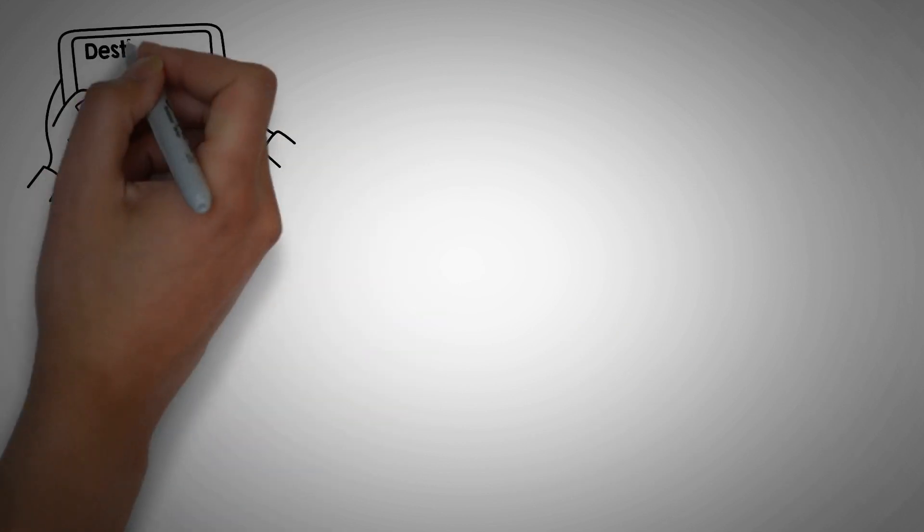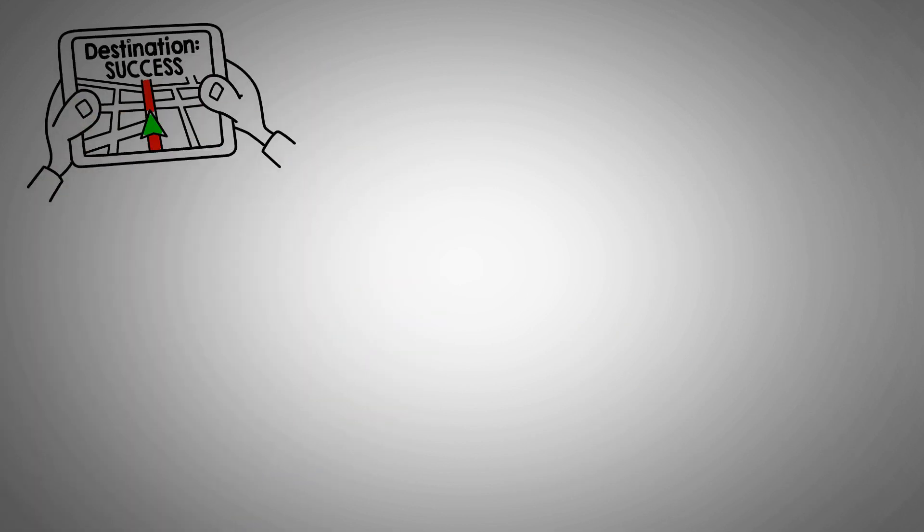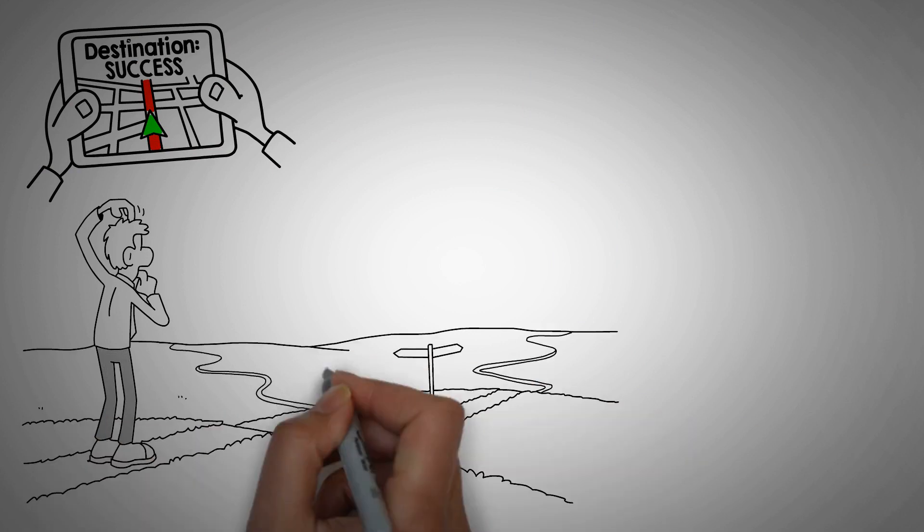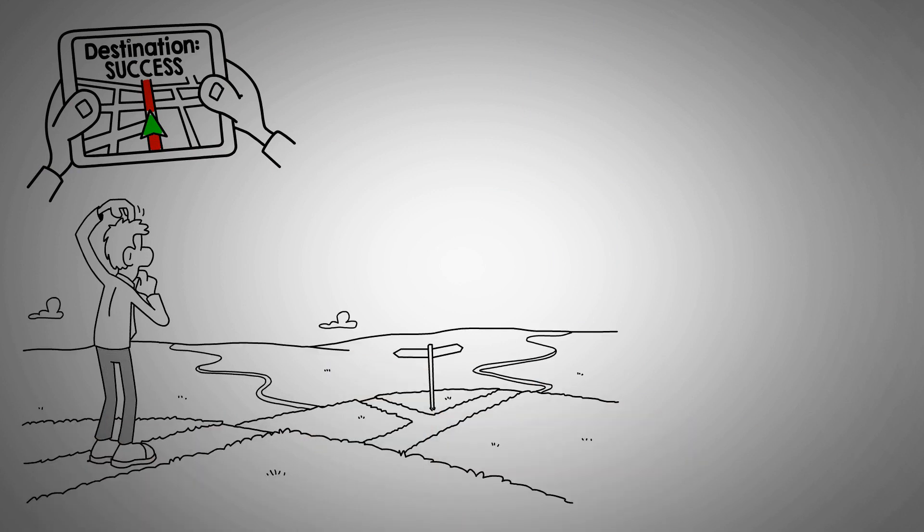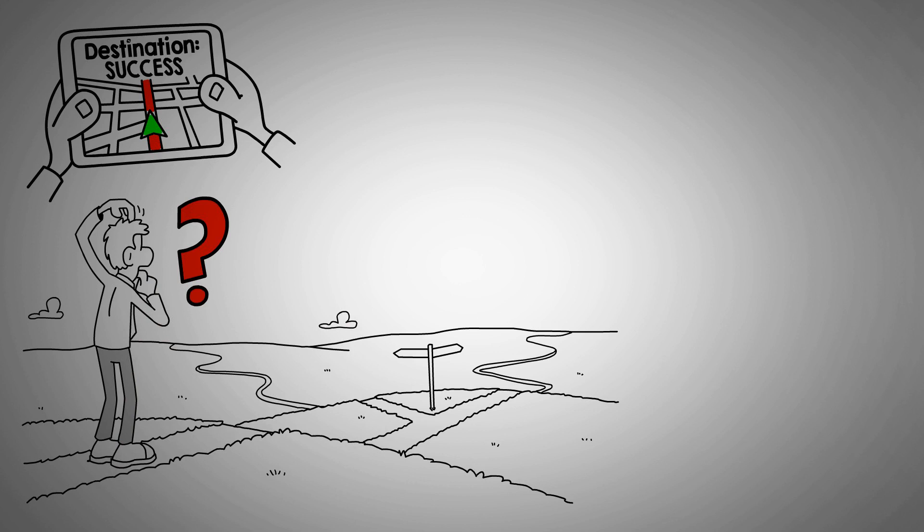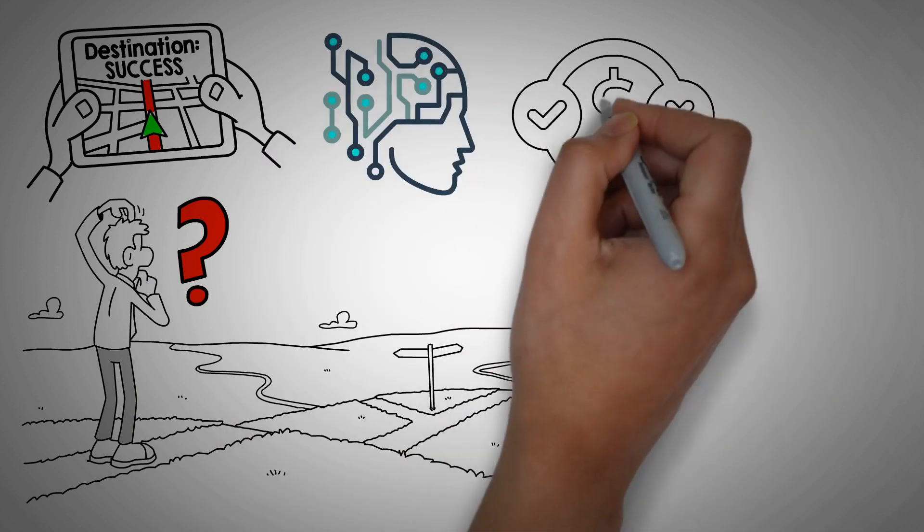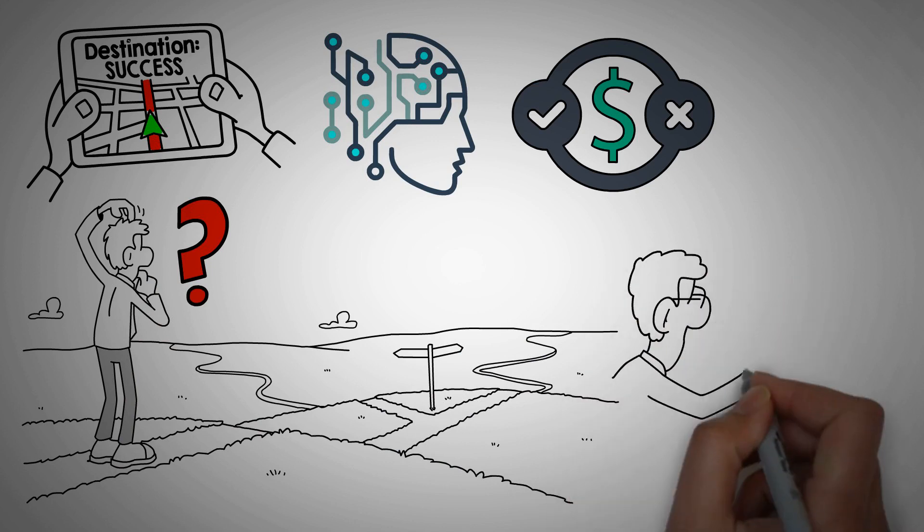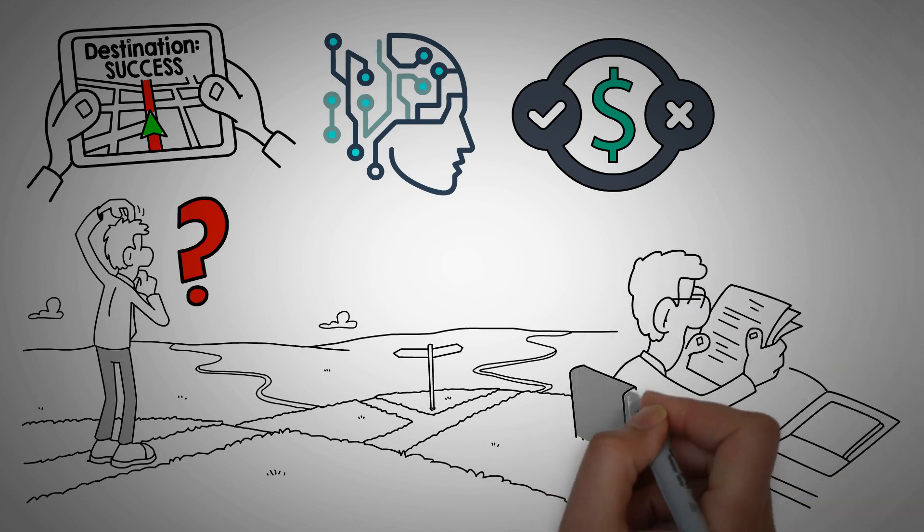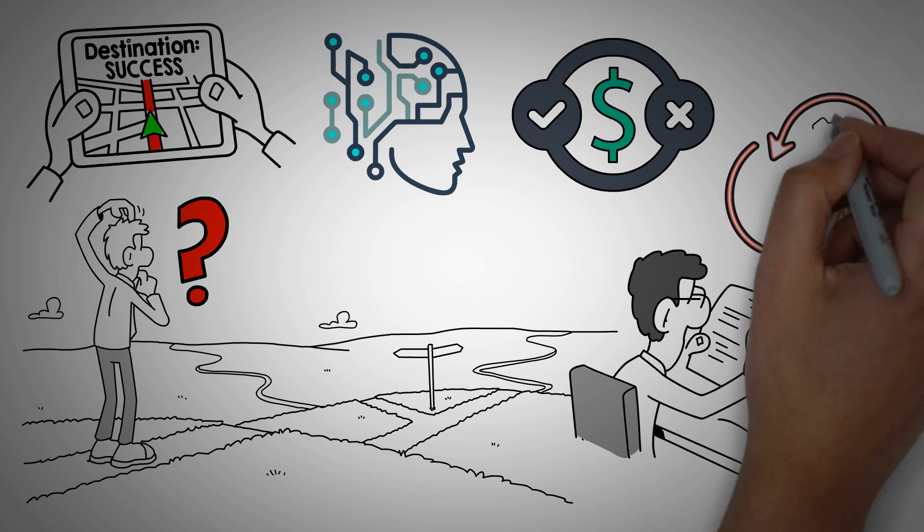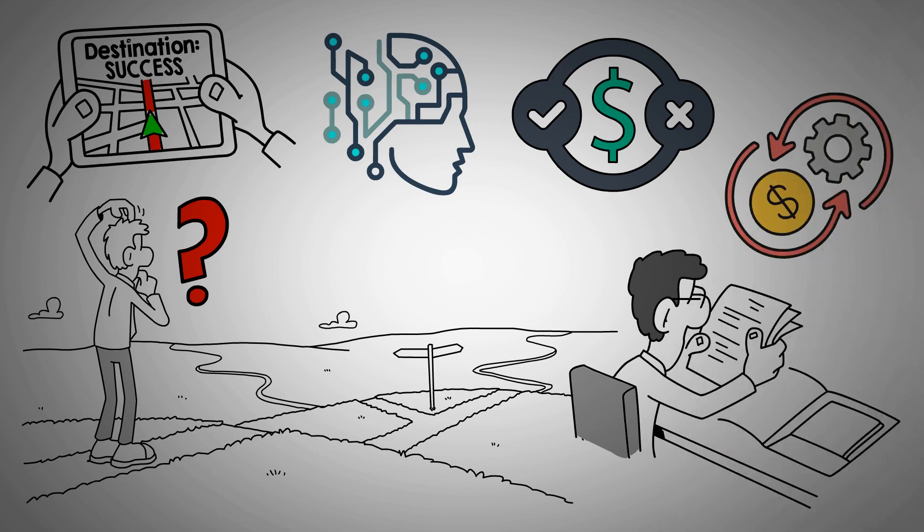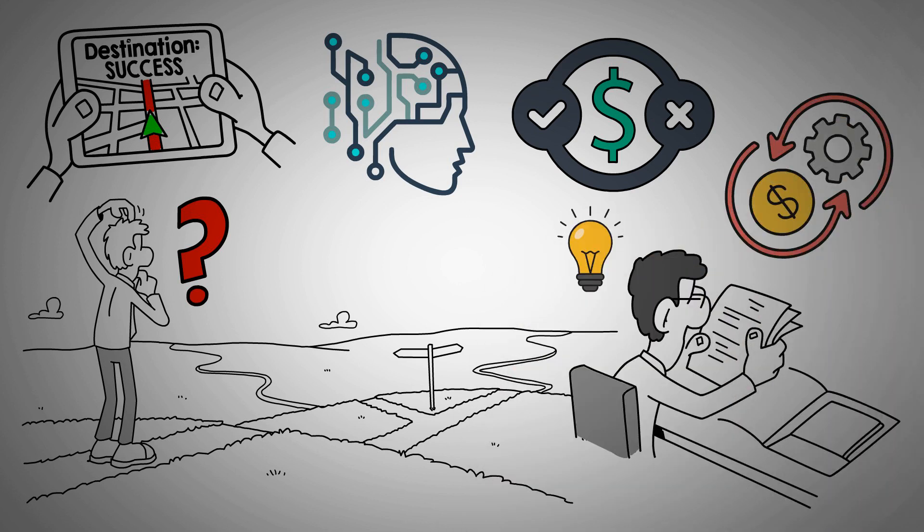Let's say you always rely on your GPS to get around. One day it conks out and you have to find your way without it. You might realize you don't really know the streets as well as you thought. That's kind of like using AI for financial decisions. If you don't regularly work through those numbers and strategies yourself, your ability to navigate the complex world of finance might not be as sharp as you need it to be.